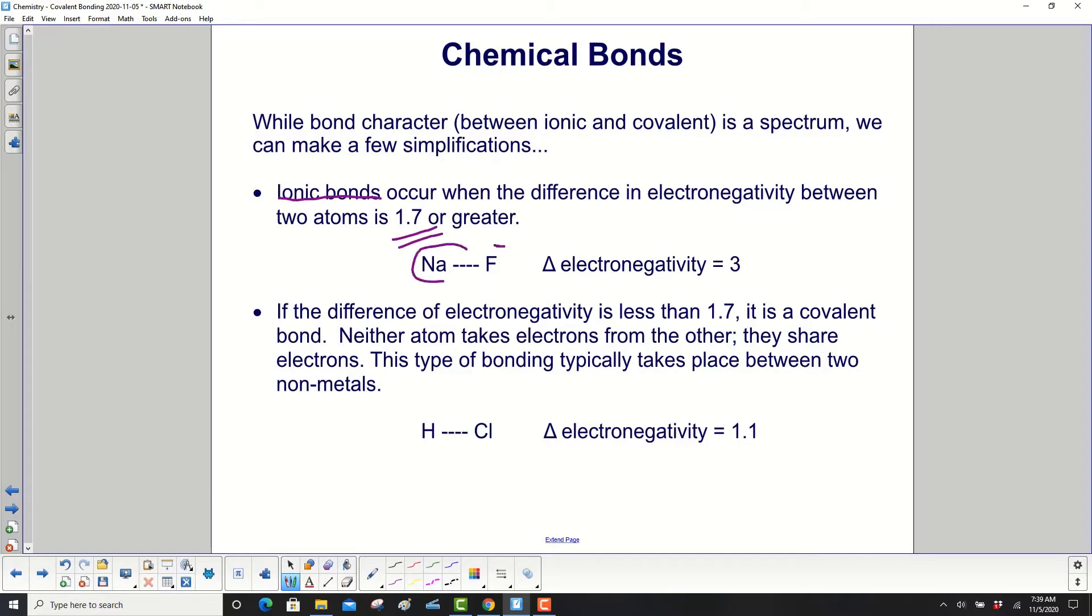So sodium and fluorine, the difference in electronegativity is 3, so that would be an ionic bond. If the difference of electronegativity is less than 1.7, it is a covalent bond.